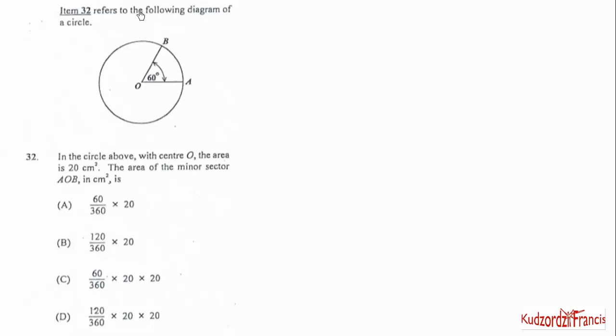Item 32 refers to the following diagram of a circle. In the diagram above, with center O, the area is 20 cm². The area of the minor sector AOB in cm².